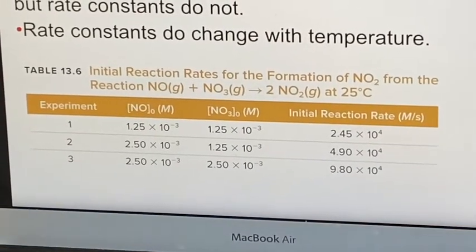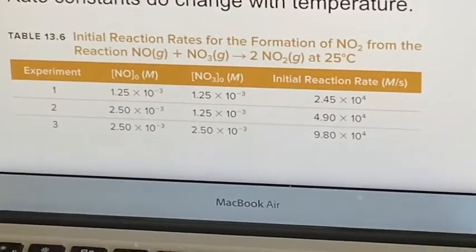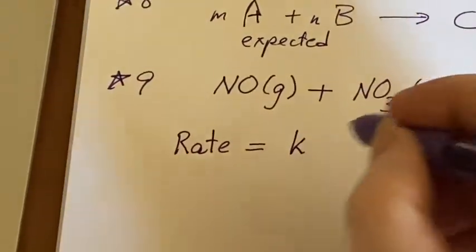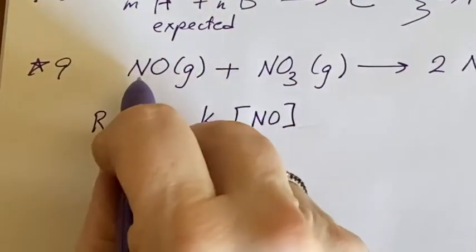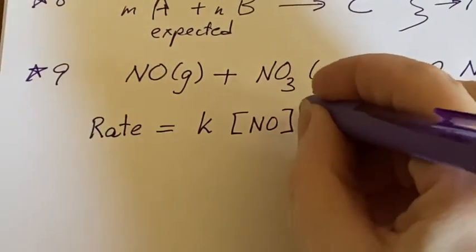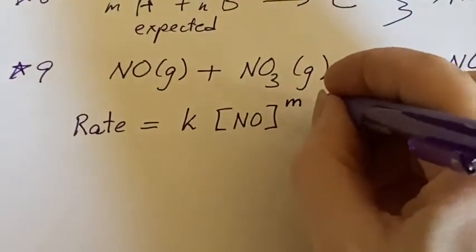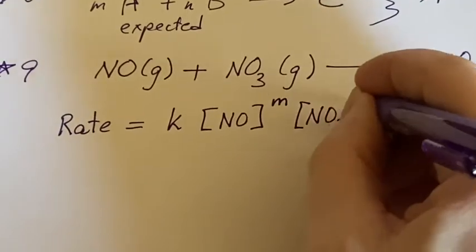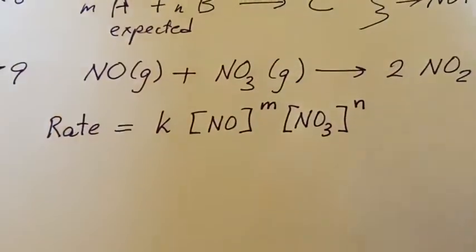What we always start with in a case like this is a guess. We're going to guess that the rate is going to have some constant, and it's going to depend on the concentration of the first reactant to some power, which I don't know what it is yet, and the concentration of the other reactant to a different power. This is always my first guess.